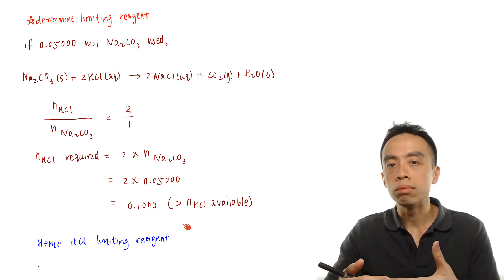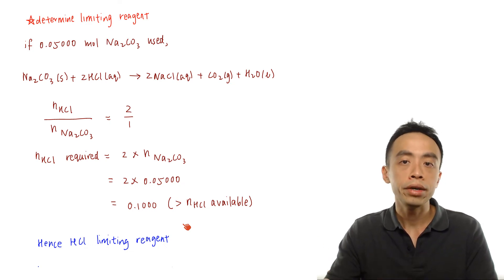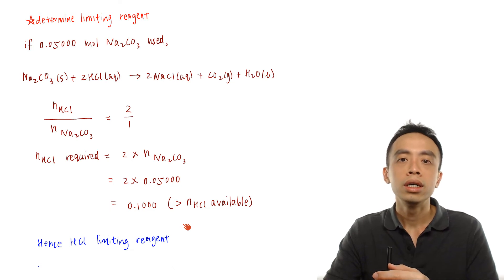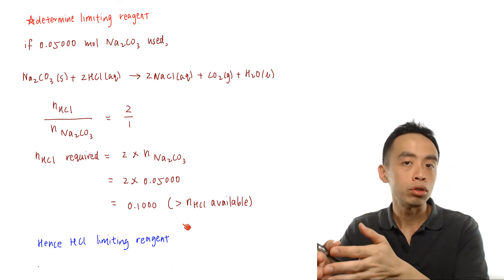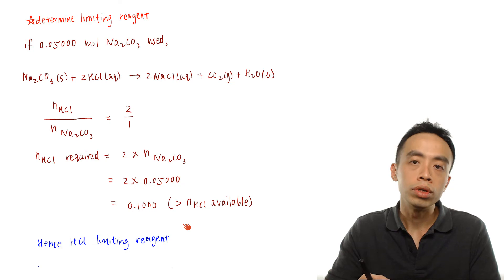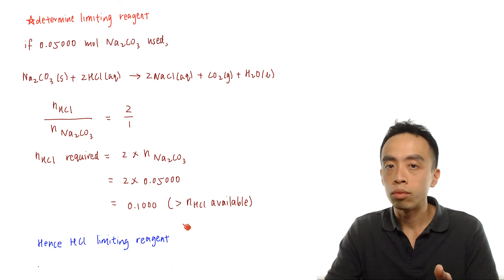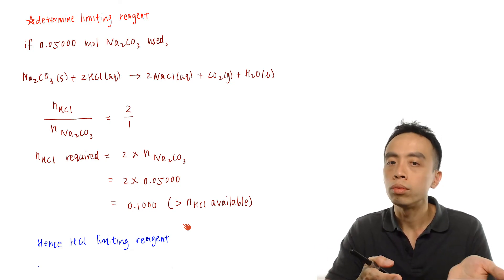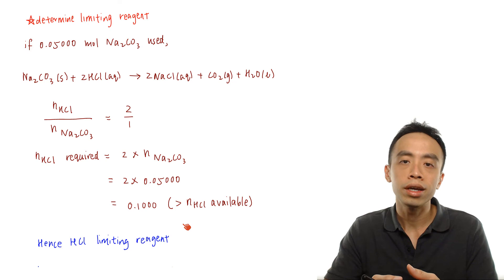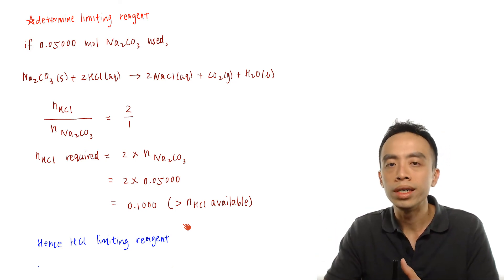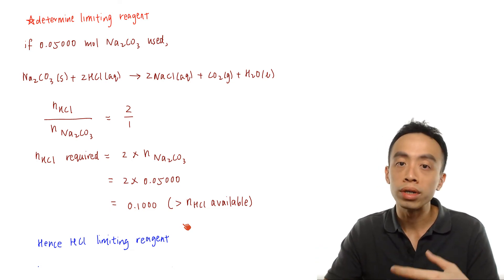The idea of limiting reagent is simple: if reactant A reacts with reactant B, use up 100% of A and determine how much B is required, then compare against how much B you actually have. If you have enough B to react with all of A, then A is limiting and B is in excess. If you don't have enough B, then B is limiting and A is in excess. Once the limiting reagent is determined, we can calculate the amount of product formed.